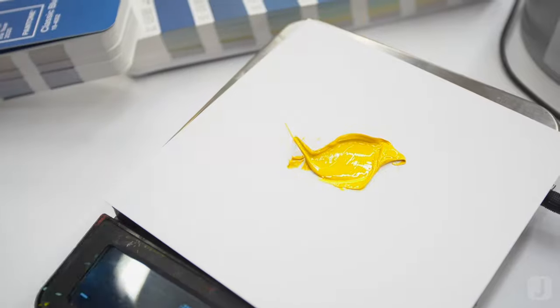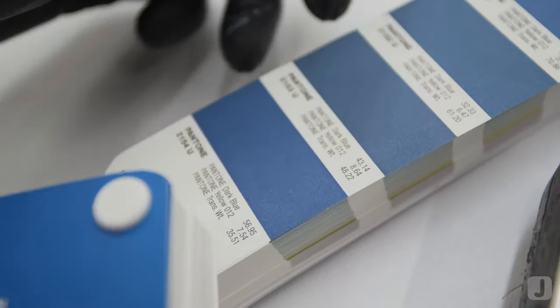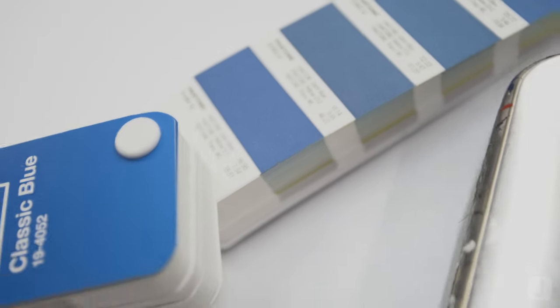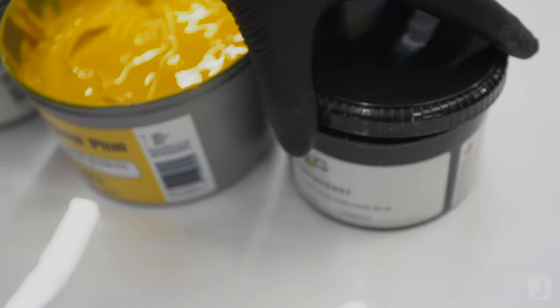When Pantone describes classic blue they've mentioned that it's a shade that is reminiscent of the sky at dusk. The base inks of yellow and blue are the perfect combination to fully realize this concept. The yellow hue of a setting sun combined with the depth of a dark blue truly bring this concept to life.